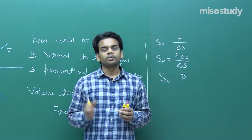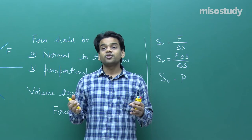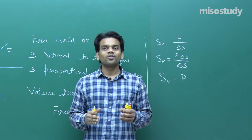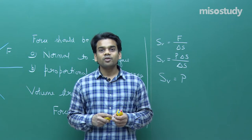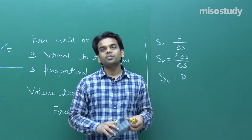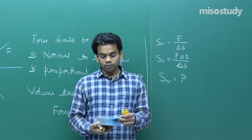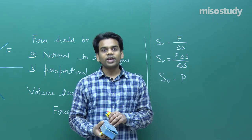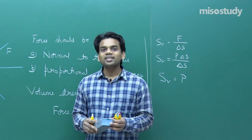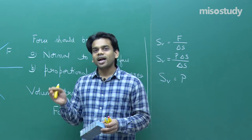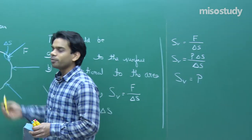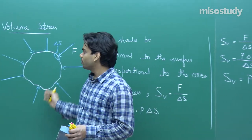Remember, you have to take a small object because if you take a larger object, pressure will vary with respect to height. You have to keep the dimensions of the object very small so that pressure is uniform at that particular position and acts uniformly at all points of the object.